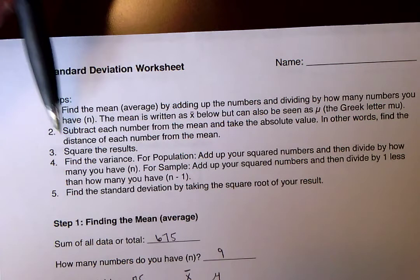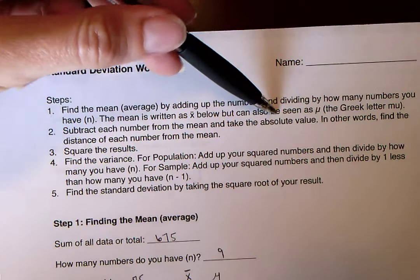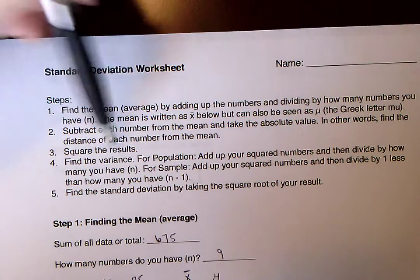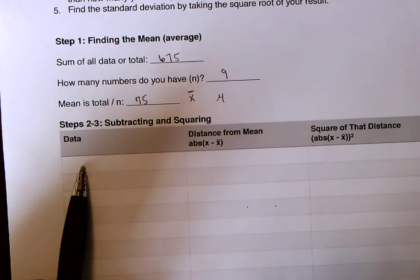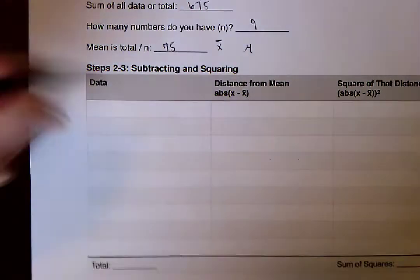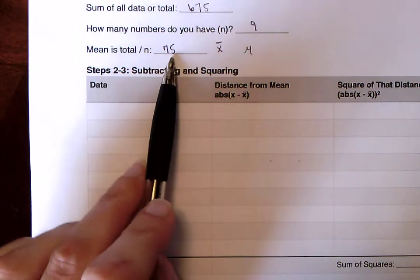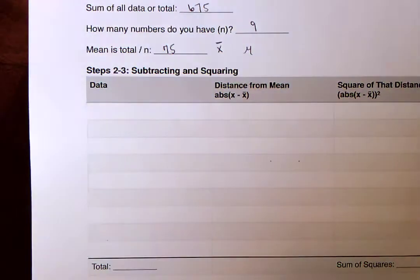So once you've found the mean, the next step is to subtract each number from the mean and take the absolute value. And I said, in other words, find the distance of each of your numbers from the mean. So if we look at our data, we're going to write in each one of our data, and we're going to see how far is it from 75. That's what we want to do. How far is it from our mean.